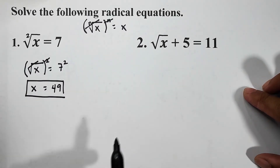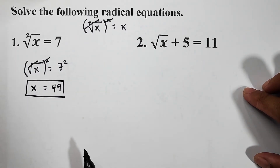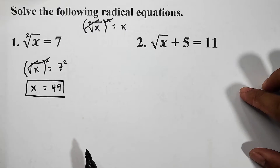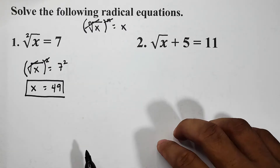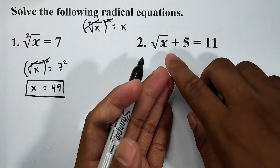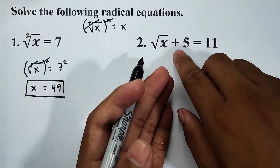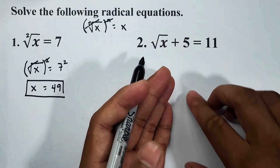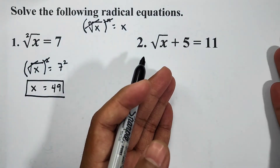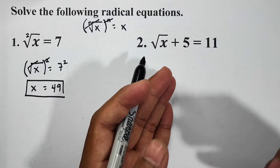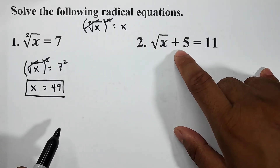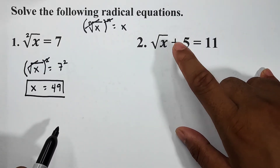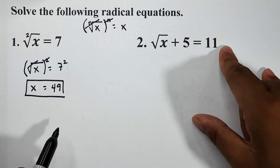Now let's continue with number two. For number two we have the square root of x plus five is equal to 11. As you can see, on the left side of the equation we have two different terms, and we have the other term, 11, on the other side.